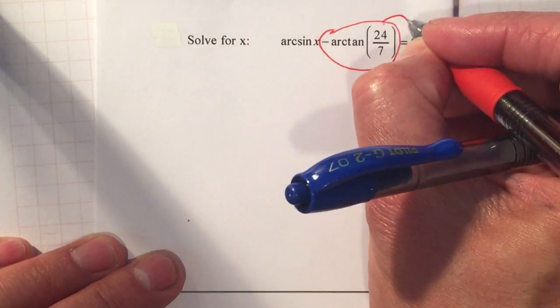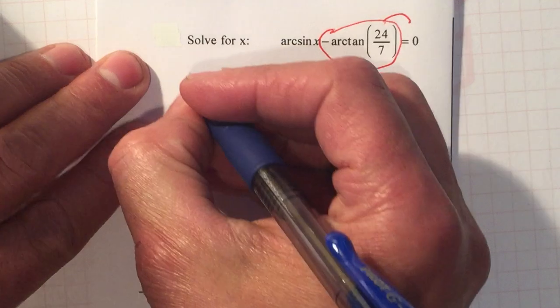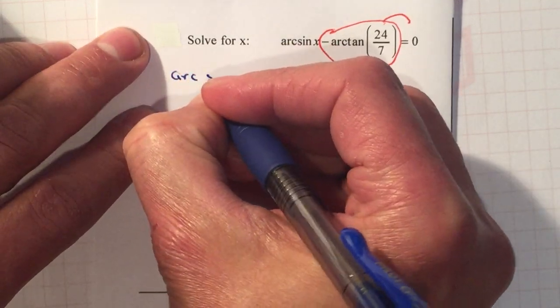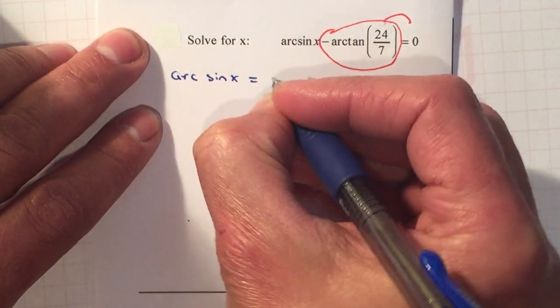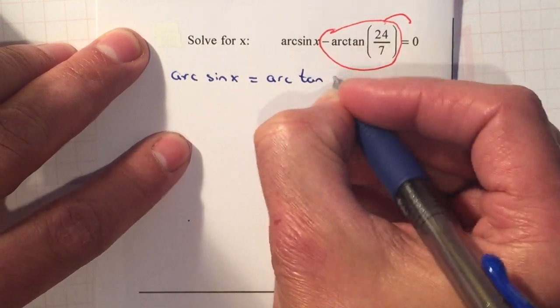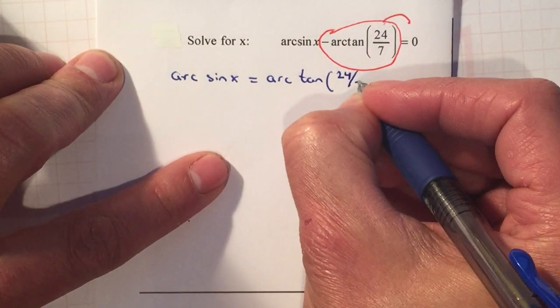It's negative, so when we move it to the right it becomes positive: arc sine of X equals arc tangent of 24 over 7.